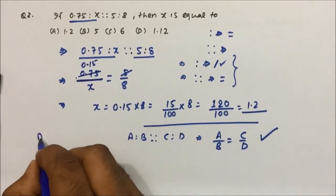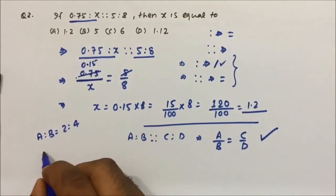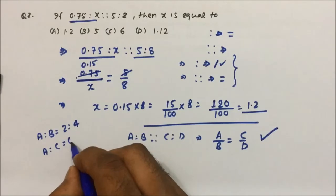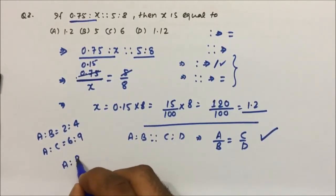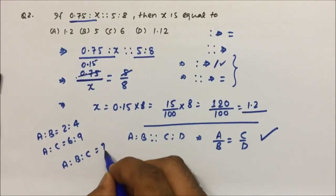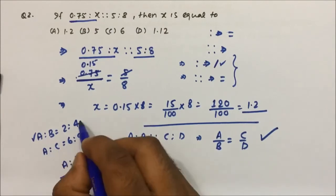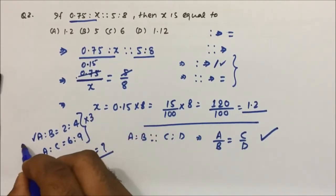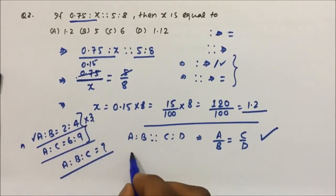Suppose if a question is A to B ratio is 2 to 4, and A to C ratio is 6 to 9, and they're asking you A to B to C ratio. In that case, whatever value is common - A and A is common - we will make A value equal in the equations, and then we can easily find it out.